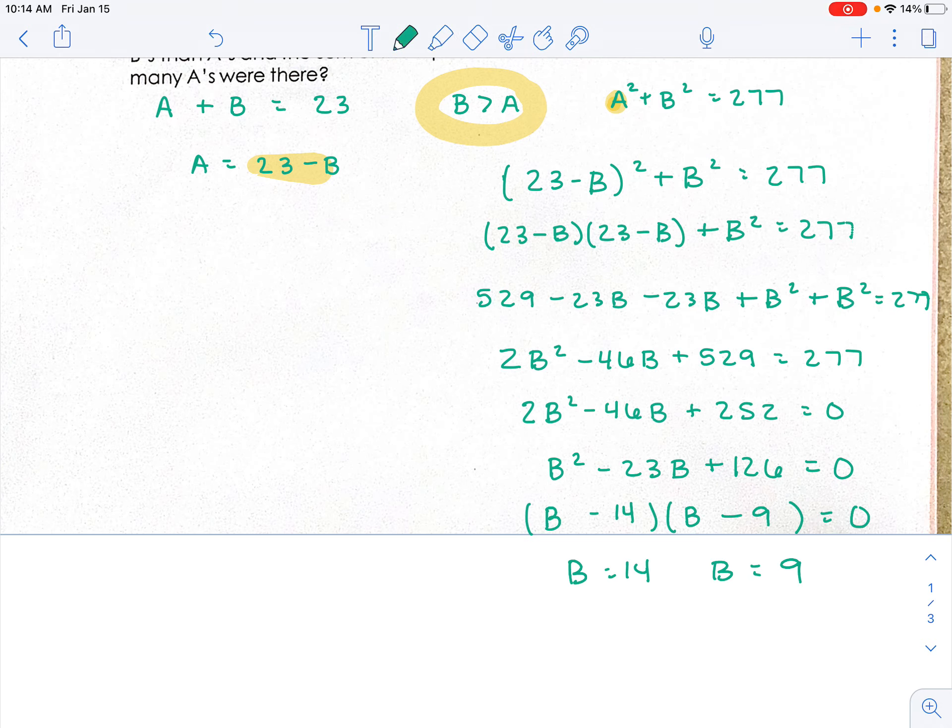Now here's where we figure out which one it is. This equation up here, it tells us that the B's have to be greater than the A's. So your B's have to be the bigger one, 14, whereas your A's...